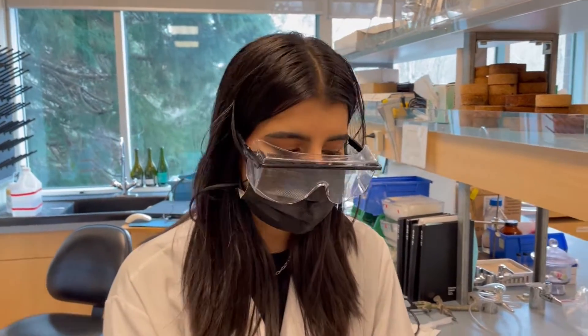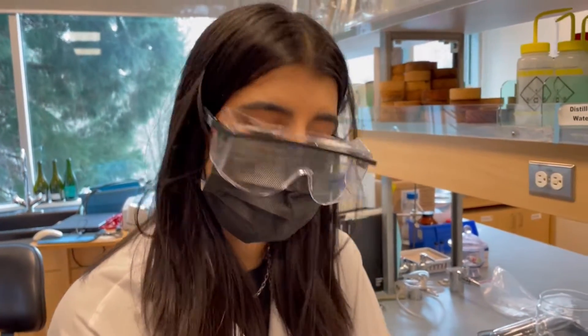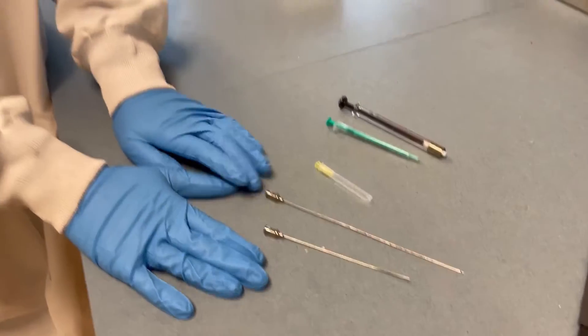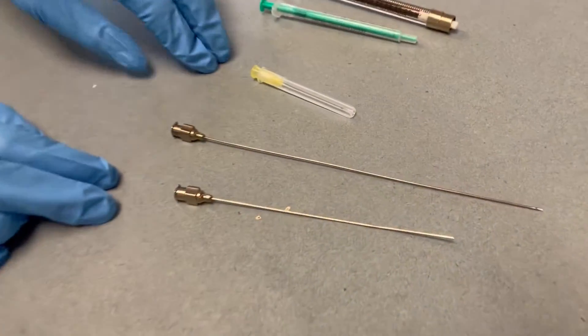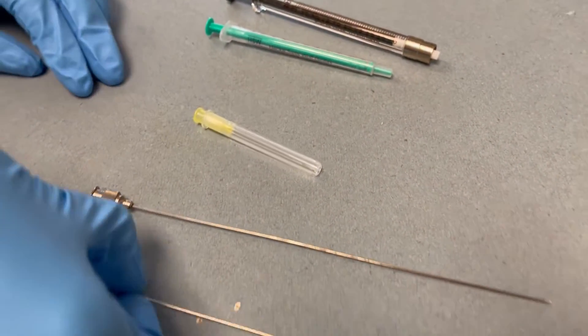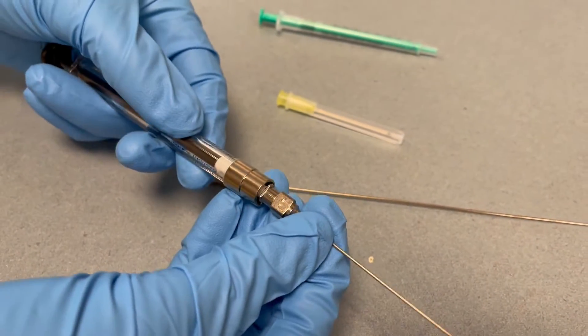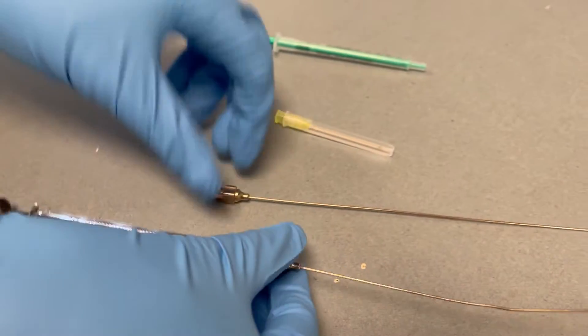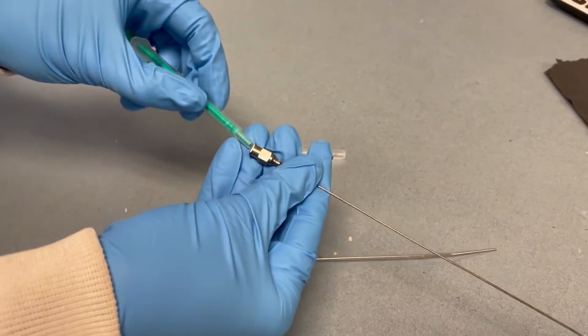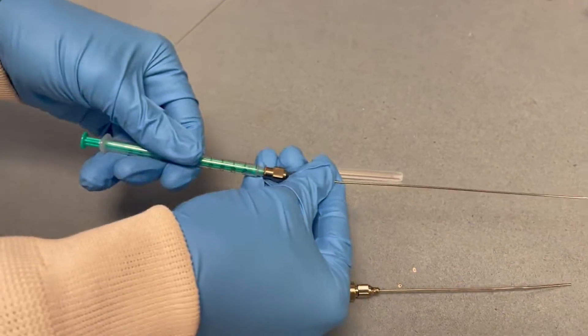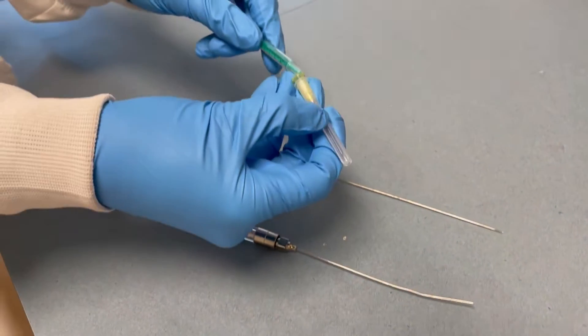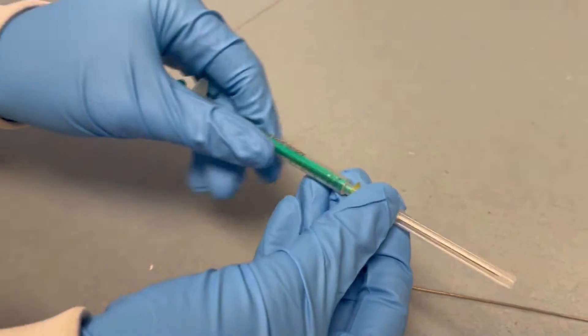We often use needles in this lab and today we'll be talking about their safe handling. We either use reusable stainless steel or plastic disposable needles. Both have these luer locks that can be twisted onto Hamilton syringes or simply pushed onto the plastic ones. The plastic needles are the same way.